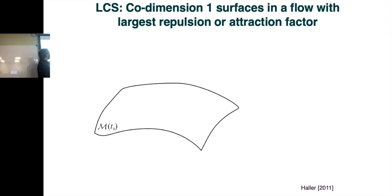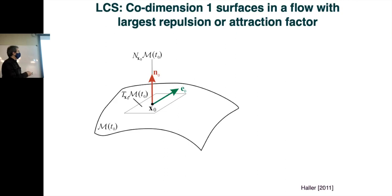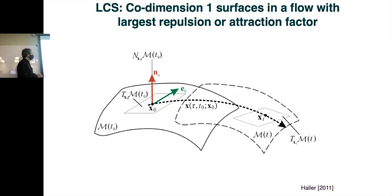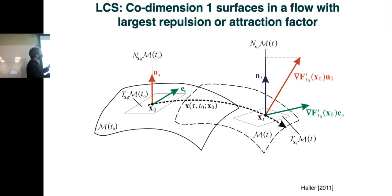Think of a 3D flow. We're looking for two-dimensional surfaces. Some co-dimension one surfaces in a flow with the largest repulsion or attraction factor. So this is a candidate surface. We've got a point on this material surface. And if we look at the normal to the surface at that point, that's given by N. And E is one of the vectors that's tangent to the surface. If we follow this whole surface forward in time, we've got a new surface. We've got a new tangent to that surface. That's this blue N at time T. If we had just followed how this normal at the initial time flowed forward, we can compare those two and get what we call a repulsion factor.